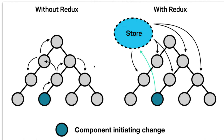For example, in a shopping cart application, the state could include items, product information added to the cart, the total price, and the quantity of each item. When you add or remove a product, you update this global store — add a new item, remove an item, update the total. Every component can access that information anywhere in the whole tree. This is the advantage: no need to pass props and state from child to parent to grandchild. We have centralized the state inside a store.